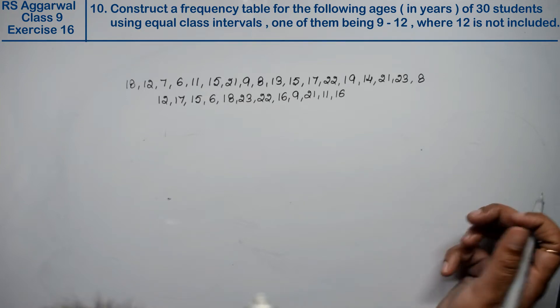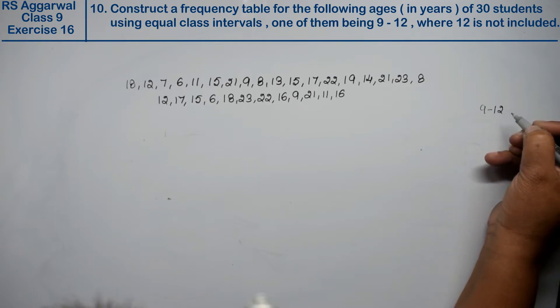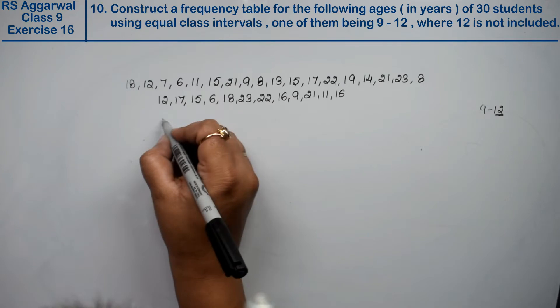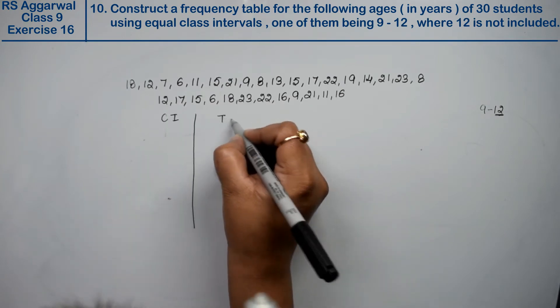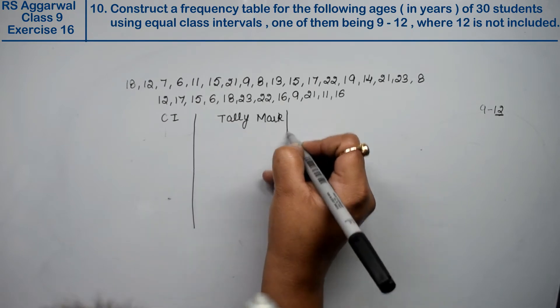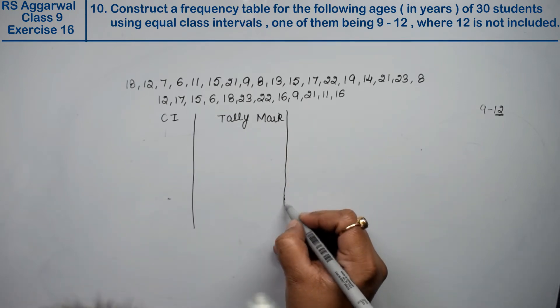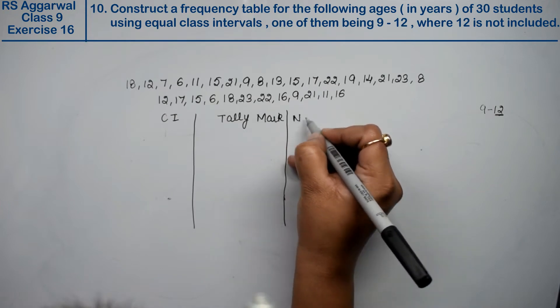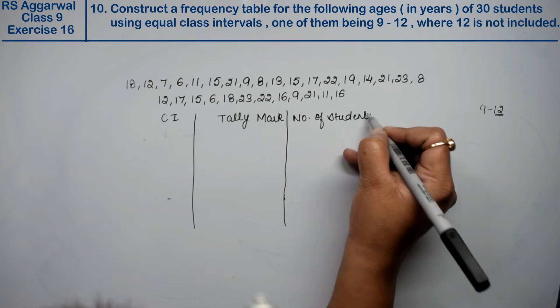One of them being 9 to 12, where 12 is not included. The class intervals do not include the upper limit. First, we have class intervals, tally marks, and we have students' age, so we have number of students here. Number of students or frequency is one and the same thing.